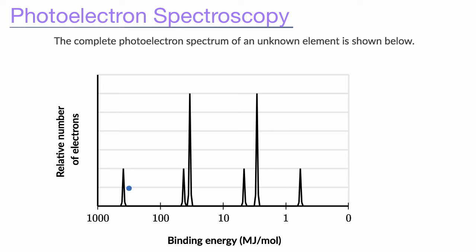The first question is: what's even going on, and how is this generated? The big picture is the analysis is done by taking a stream of atoms going in one direction — those are the atoms we're trying to analyze — and then in the other direction, you send high-energy photons that are going to bombard those atoms.